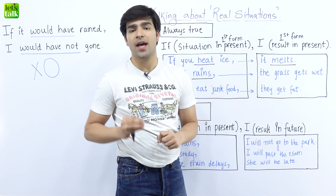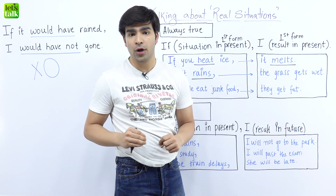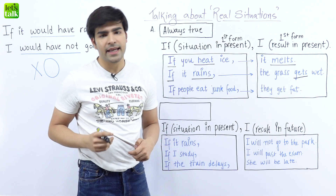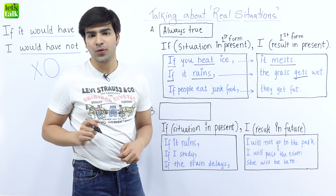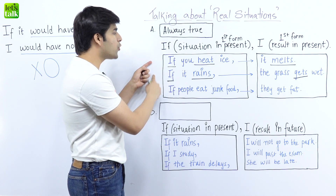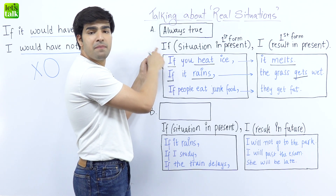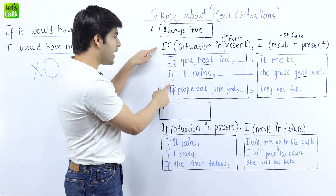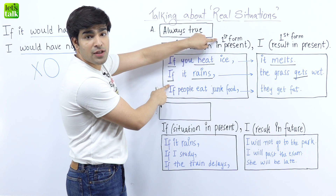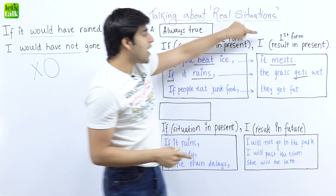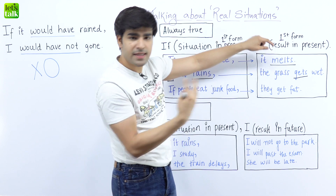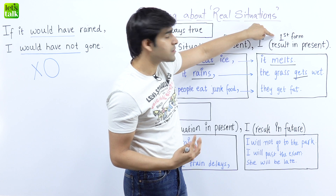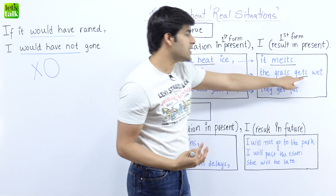What is the base form of the verb in the result clause? It is 'gets' — the grass gets wet. It is the general truth of life. We are correlating these examples with the main structure written here for reference: if situation in present using first form, then result in present using first form, which is 'gets' here.